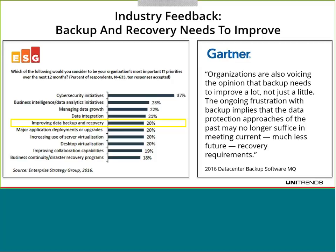Every fall — November, December, January — vendors and analyst firms start rolling out their annual surveys because we're always trying to understand what's in the head of the IT professional. I have results from a survey that ESG, Enterprise Strategy Group, conducted earlier this year about the top things on IT's mind over the next 12 months — 2016. One of them, which I've highlighted in a rectangle, is improving data backup and recovery. 20% of respondents cited that as one of the top things they needed to focus on.